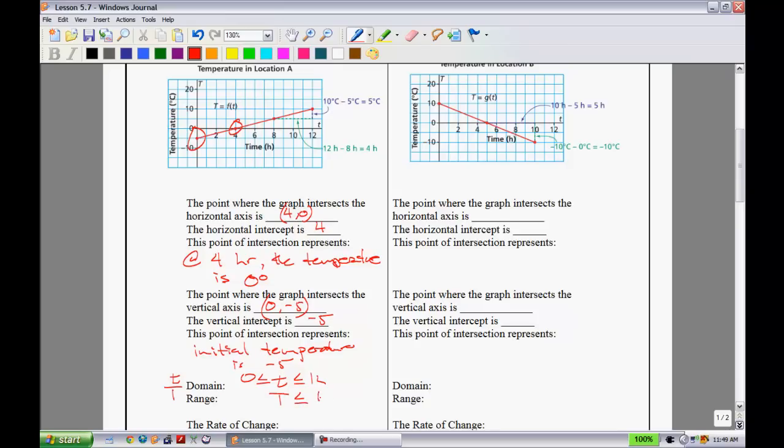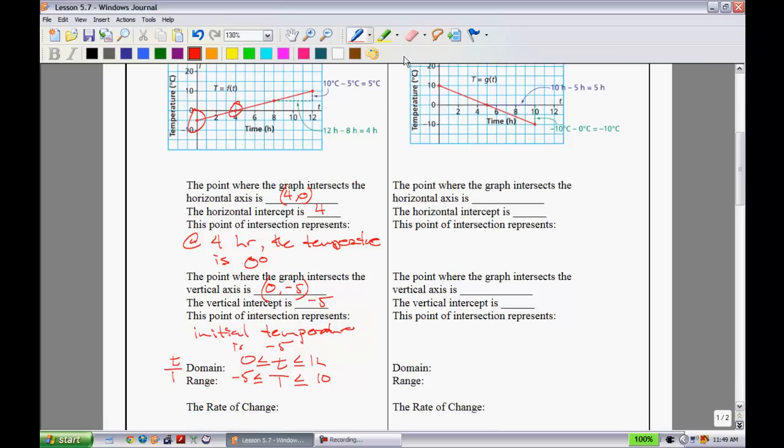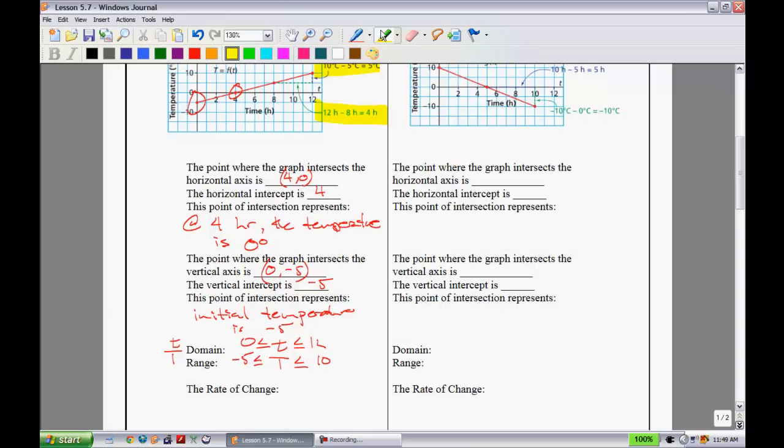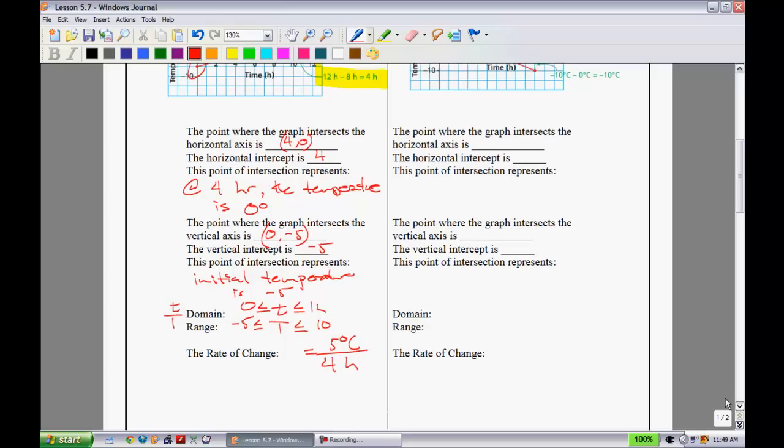In terms of temperature for the range, the maximum temperature looks to be 10 and the minimum temperature looks to be -5. In terms of rate of change, the information I'm going to use is this highlighted region. They tell you the temperature over the course of 4 hours has gone up 5 degrees. So the rate of change is 5 degrees Celsius over 4 hours. When you divide those, we have 1.25 degrees Celsius per hour.